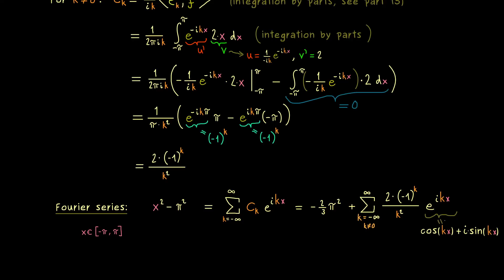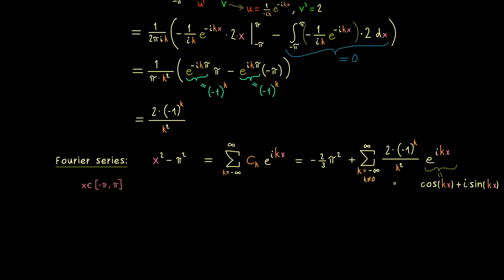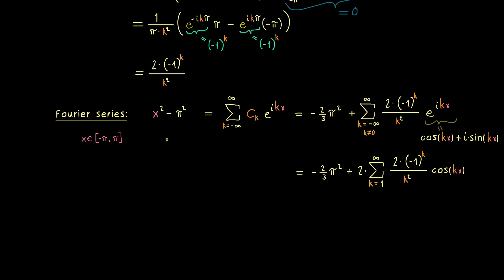The left-hand side is a real number, so the right-hand side must also be real. We can take the real part on the right-hand side without changing anything, which means only the cosine function remains. Moreover, the cosine function is even, so it doesn't matter if we put in -k or +k. Hence we can take one part of the infinite sum times 2, giving the sum from k=1 to infinity with the same coefficients times the cosine function.